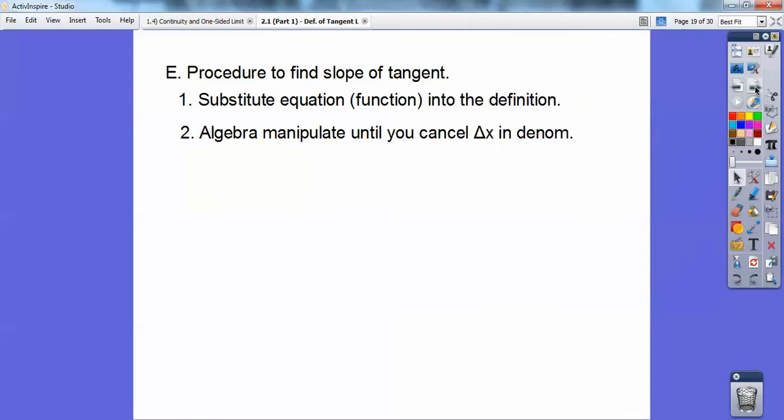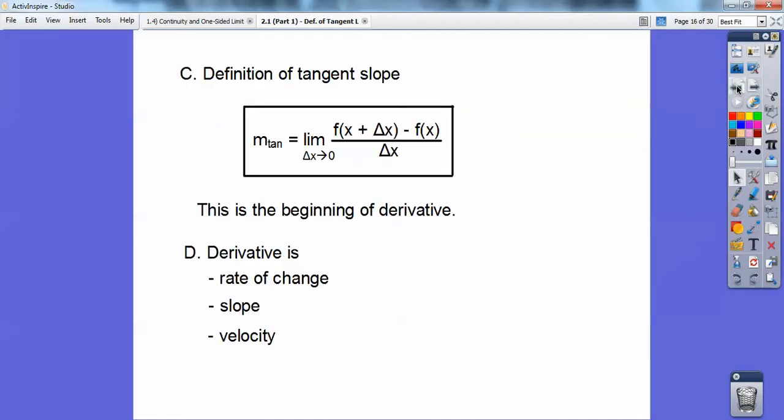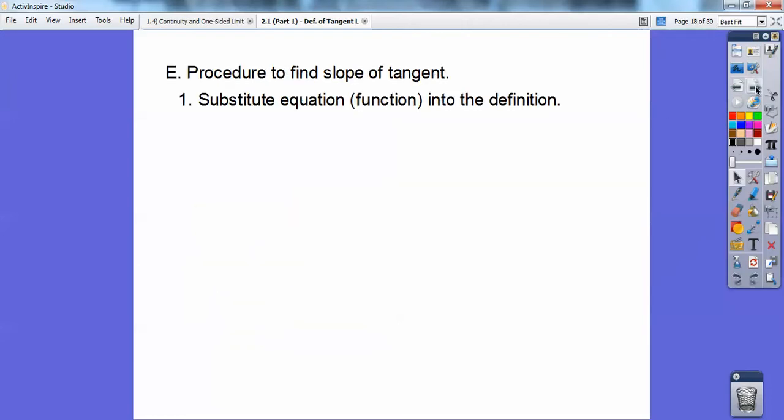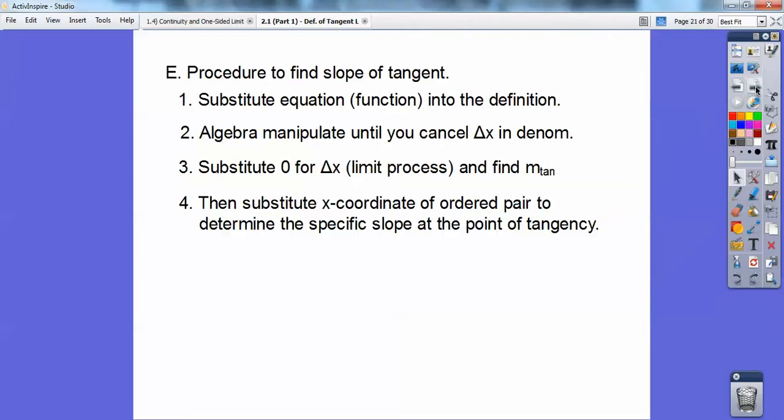Then you do some algebra manipulation until you can cancel out your Δx in the denominator, because you want to cancel that out so you can let your Δx get close to 0. At this point in this definition, Δx can't be 0 because it's in the denominator. So we substitute our equation in, do algebra manipulation, get the Δx to cancel out, and then you can substitute in 0.